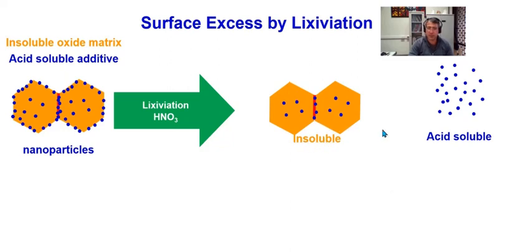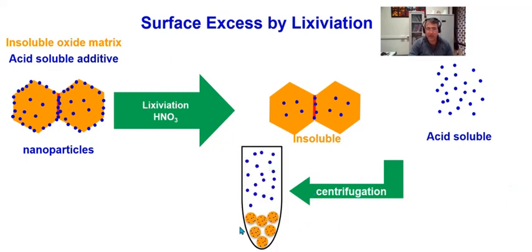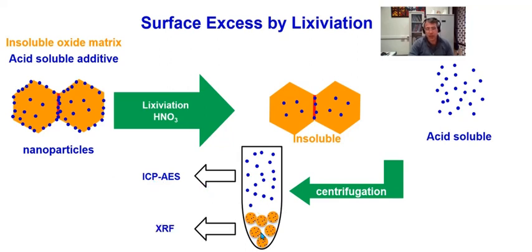The insoluble part and the acid-soluble part are separated by centrifugation, giving a phase separation. It is then possible to know the concentration of atoms in solution by ICP, for example, and to know the concentration of additive in the nanoparticles and insoluble part. By this method, it is very easy to determine the concentration of additive at the surface — that is, the surface excess.